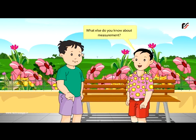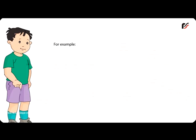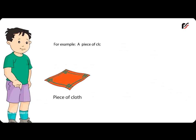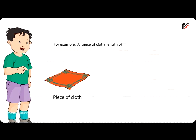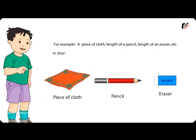What else do you know about measurement? We measure short lengths in cm. For example, a piece of cloth, the length of a pencil, the length of an eraser, etc. In short, centimeter is written as cm.